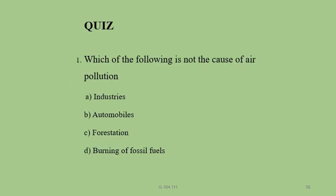MCQ: Which of the following is NOT a cause of air pollution? A) Industries, B) Automobiles, C) Forestation, D) Burning of fossil fuels. Answer: C — forestation. Industries, automobiles, and burning of fossil fuels all cause air pollution. Forestation does not cause air pollution; in fact, increasing forestation decreases pollution.